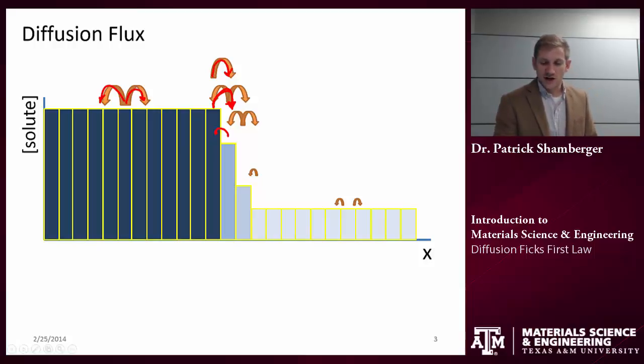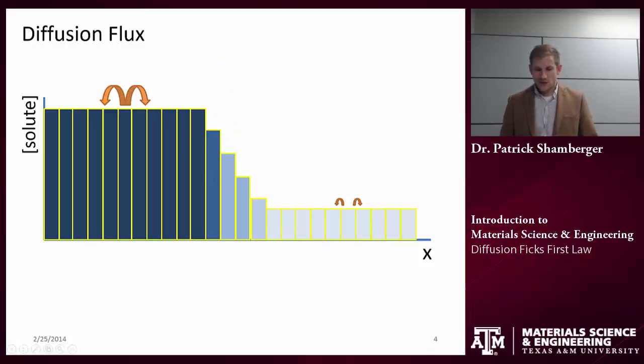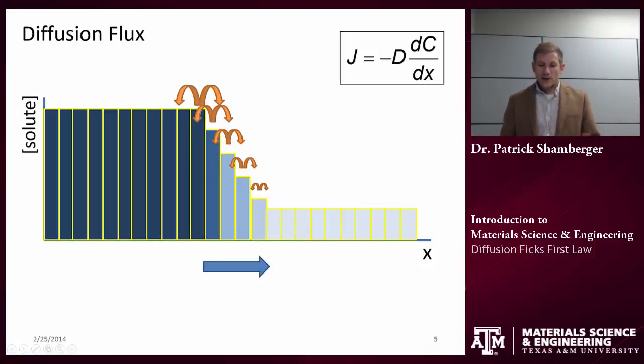And so we could do this experiment again. And again, we have a large flux from bin 1 to bin 2. We have a moderate flux from 2 to 3, maybe a moderate smaller from 3 to 4. But in each case, the flux in one direction from left to right is larger than the flux from the right to the left.